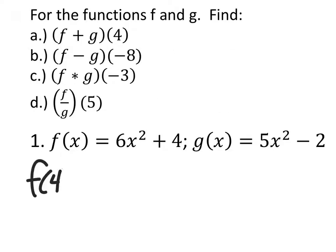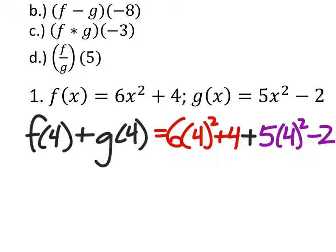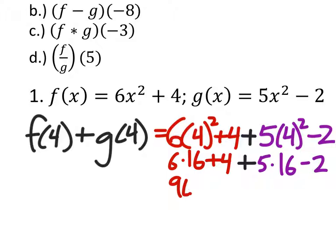So, I have f of four plus g of four, because they gave us the x value for both. So, if I make my f of x, I'll put that in red. So, I got six times four squared plus four. Then I'm going to add this to g of x, but my x is four again. So, five times four squared minus two.